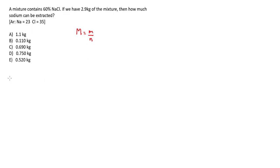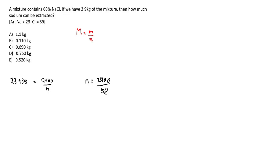We find big M for sodium chloride: sodium is 23, chlorine is 35, so NaCl is 23 + 35 = 58. The sample mass is 2.9 kilograms, which we convert to 2,900 grams. So n = 2,900 divided by 58. Since 29 times 2 is 58, this works out to 50 moles. No calculator is needed in the IMAT — they always give you numbers that work out nicely. Think about how the numbers relate to each other.